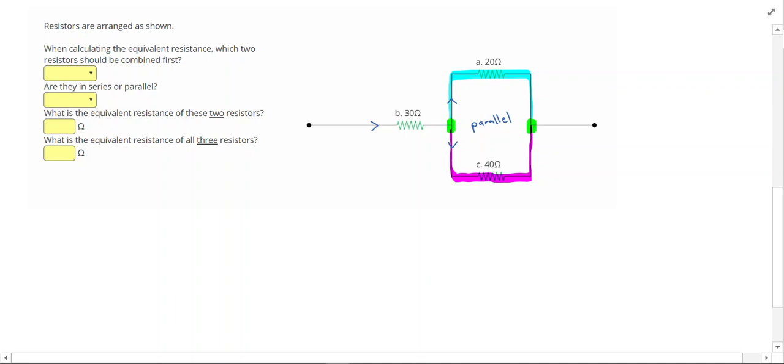I'm going to combine A and C. They're in parallel, and I'm going to use my parallel equation. So I'm going to plug in 1 divided by the quantity 1 over 20 plus 1 over 40. If you do it this way, if you had more resistors that were in parallel, you could combine 3 or 4 or 5 at a time if you wanted.